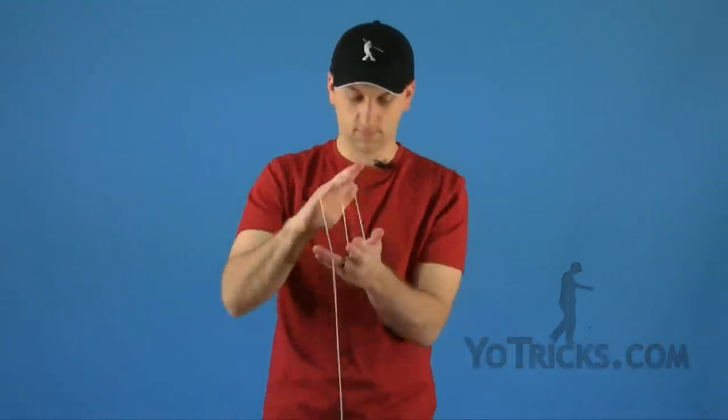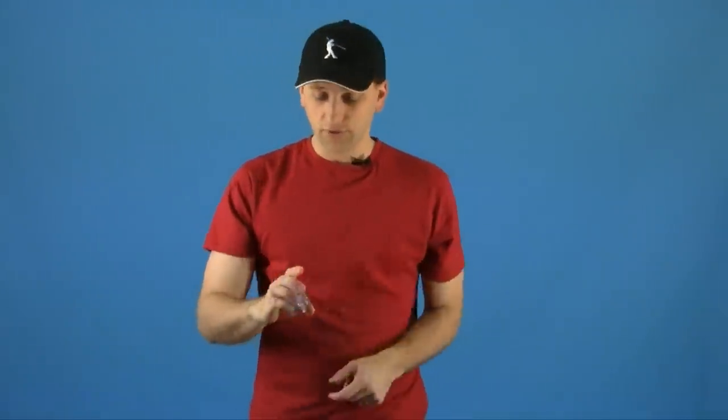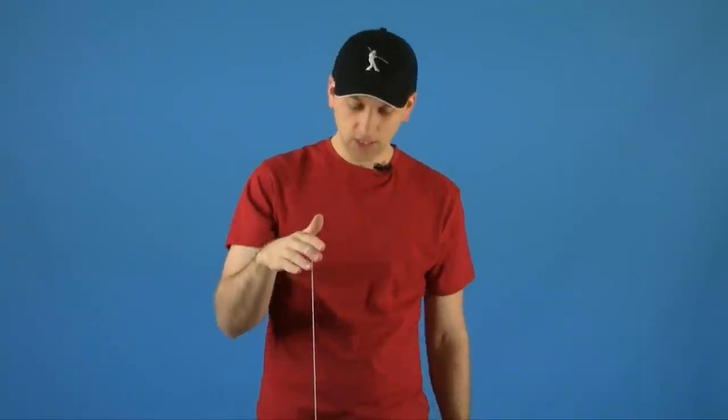This trick is called the Four Leaf Clover and it looks like this. Now the Four Leaf Clover, just like any picture trick, it should be easier to learn if you let the yoyo hang down at the bottom of the string without spinning.